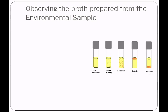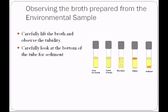First, you're going to observe the broth prepared from the environmental sample — you will not be using the microscope for this. Very carefully lift the broth out of the rack and observe the turbidity, which is cloudiness. Also look at the bottom of the tube for sediment. You might see no turbidity but sediment, a great deal of cloudiness, or even chunks floating around — this is referred to as flocculent growth.